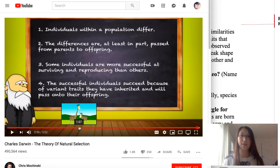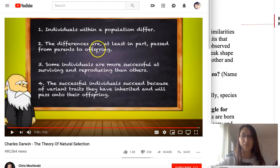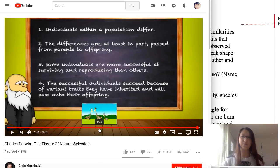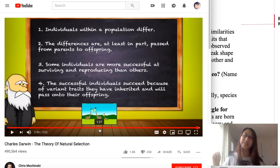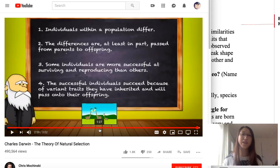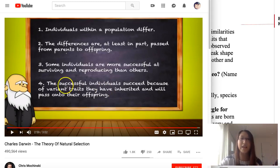If differences originated in the genes and happen to be in the gametes, those differences will be passed on to offspring. The third theory is that some individuals are more successful at surviving or reproducing than others. The taller giraffes, for example, are more successful than shorter ones. This success is determined by the environment — that's why we call it natural selection. The environment only allows individuals with favorable traits to survive and reproduce better.